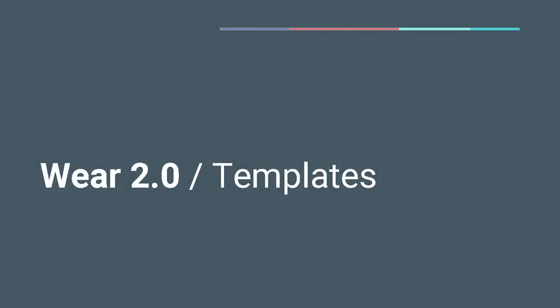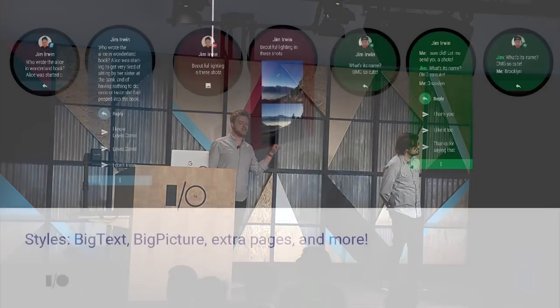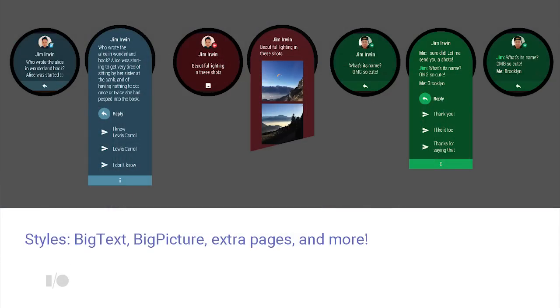What do you need to do to enhance your notifications with this new rich experience? Nothing — you get it all for free. A simple notification with text, title, icons, and an action gets all that material richness along for the ride. That said, if you want your notifications to really pop and be information rich and visually impactful, you may need to take full advantage of notification styles and templates like big text or big picture, and add extra pages for even more information.